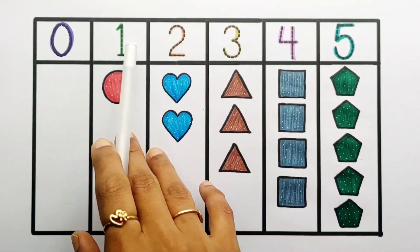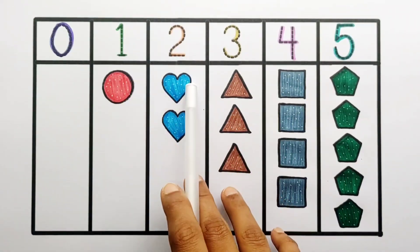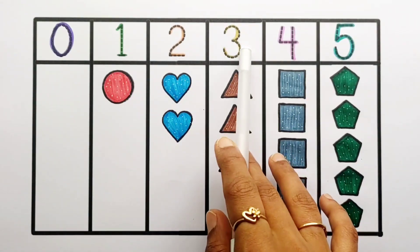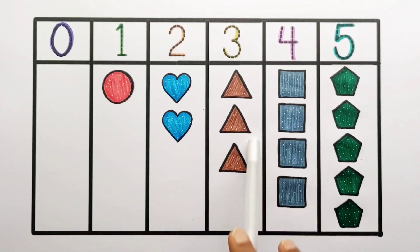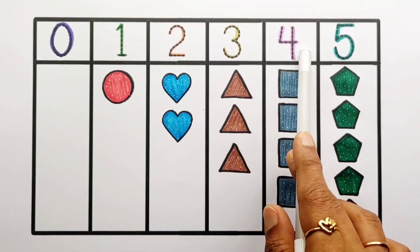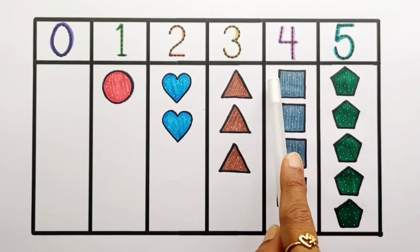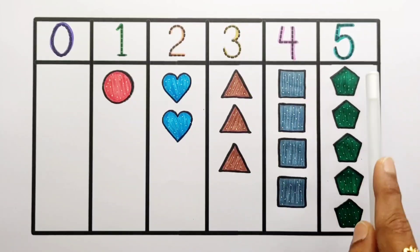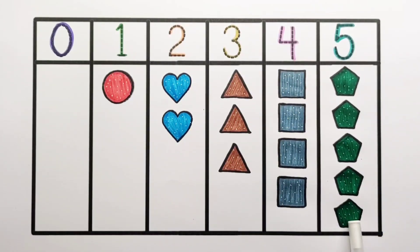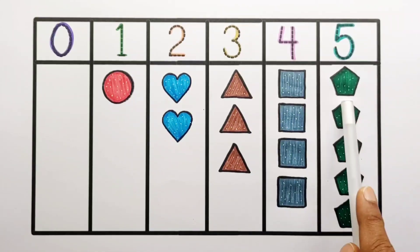Zero. One - one circle. Number 2: one, two - two hearts. Number 3: one, two, three - three triangles. Triangle has 3 sides. Number 4: one, two, three, four - four squares. Square has 4 sides. Number 5: one, two, three, four, five - five pentagons. Pentagon has 5 sides.